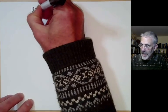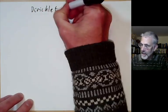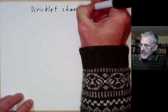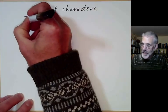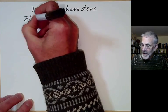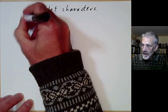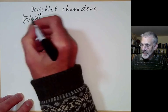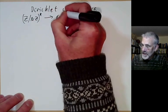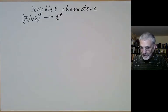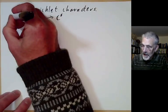This lecture is part of Berkeley Math 115, an introductory undergraduate course on number theory, and will be more about Dirichlet characters as part of the proof of Dirichlet's theorem. A Dirichlet character is a homomorphism from the multiplicative group Z modulo nZ star to the non-zero complex numbers, usually denoted by chi.